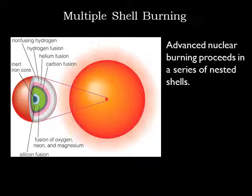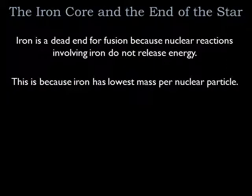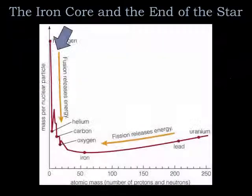During the star's final few days, it's fusing silicon into iron, and iron begins to fill up in the core. Iron is unique among the elements because it is not possible to generate any kind of nuclear energy from it. We've been getting energy in the star from fusing lighter elements — for example, fusing hydrogen into helium generates energy because helium has a lower mass per nuclear particle than hydrogen, and the extra mass is released as energy. Carbon also has a lower mass per nuclear particle than helium, so some mass disappears and becomes energy when it fuses.